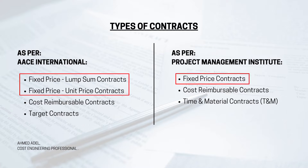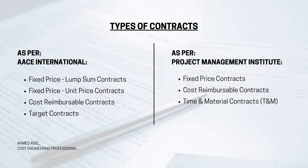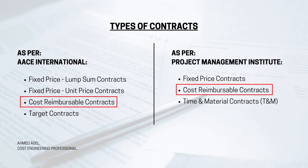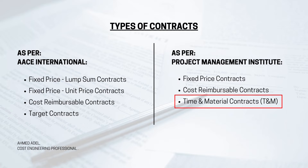As per the Project Management Institute, we have three types: fixed price contracts, cost reimbursable contracts, and time and material contracts (T&M). Fixed price appears in both AACE and PMI, but AACE splits it into lump sum and unit price. Target contracts are only in AACE, and time and material is only in PMI.